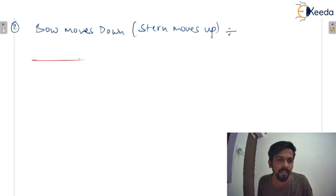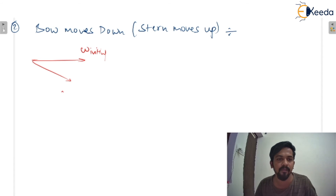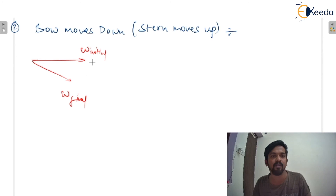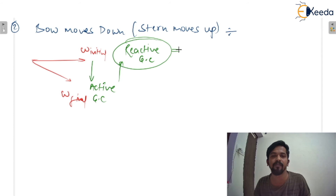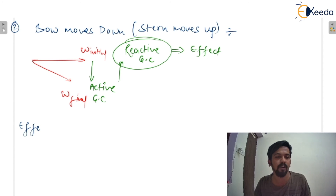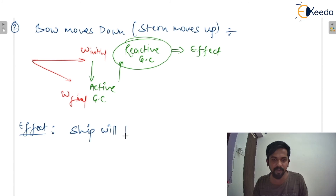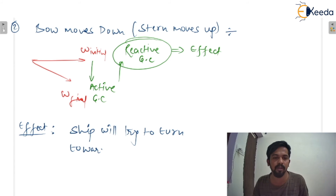So the reactive gyroscopic couple — which we know is the effective force — means the ship will try to turn towards the left side, or towards port side. We can see in the diagram: omega initial and omega final. The active gyroscopic couple is not our effect; our effect is the reactive gyroscopic couple. So the effect is: ship will try to turn towards port side.